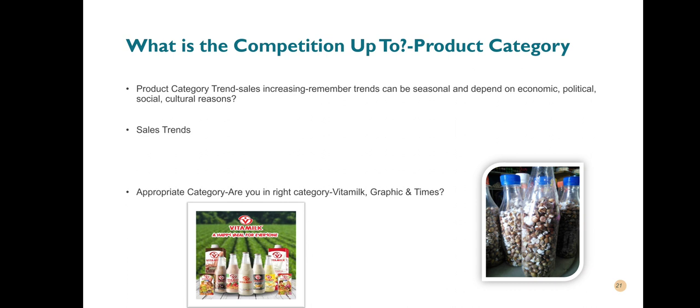Sales trends or category trends could be seasonal and depend on economic, political, social, or cultural reasons. Maybe because of a certain cultural festival, sales of products in certain categories go up. It could also be economic — maybe the country is facing economic challenges and many people have cut down their spending. All these things will give you an idea of what is happening in the product category and help you schedule your media effectively.